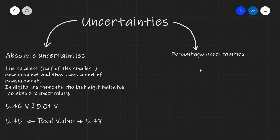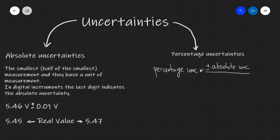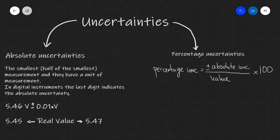We can also calculate the percentage uncertainty. Our formula for the percentage uncertainty is that it equals plus or minus our absolute uncertainty divided by our experimental value, and all of this is multiplied by 100. In other words, we take the percentage of this value with respect to this value, and then we times by 100.